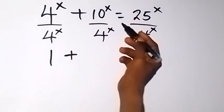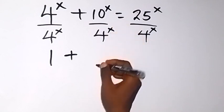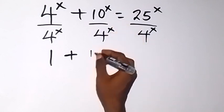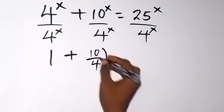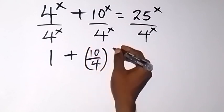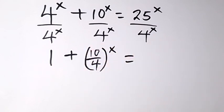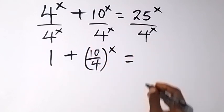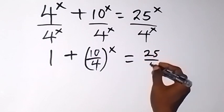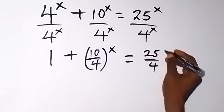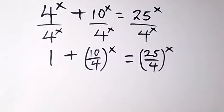Here we can take the power x out, since both are raised to power x. You can see this is 10 over 4, then raised to power x. Then equals to the same thing on the other side, which will be 25 over 4 raised to power x.